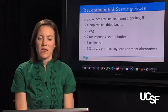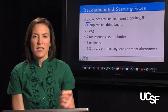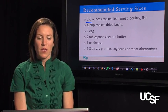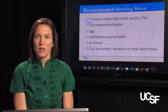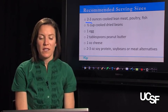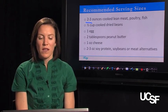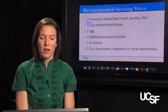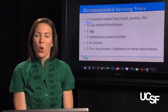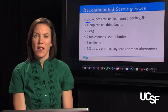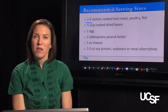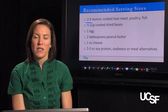What are the recommended serving sizes for proteins? You really only need about 2 to 3 ounces of cooked lean meat like poultry and fish, which in some cases provides almost half the amount of protein you need in a day. Other serving sizes include a half cup of dried beans, one egg, two tablespoons of peanut butter, one ounce of cheese — about the size of a domino — and two to three ounces of soy protein or meat alternatives.